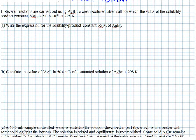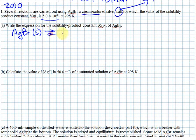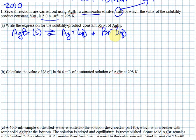This one came from the 2010 A version of the AP Chem exam. Several reactions are carried out using silver bromide, a cream-colored silver salt. Remember, 'salt' means ionic compound. The value of the solubility product constant Ksp is 5.0×10⁻¹³. That's an incredibly small number. The solubility product reaction is: AgBr(s) in equilibrium with its ions. These are equilibria where very slightly insoluble compounds dissolve.